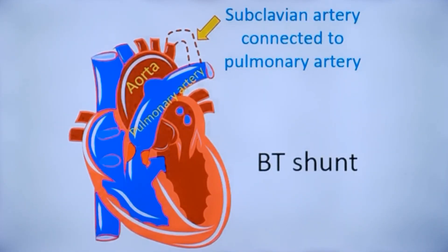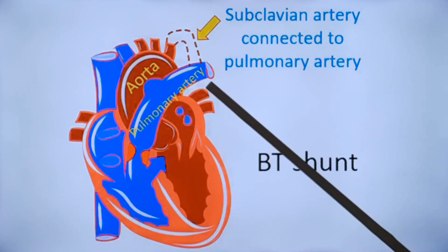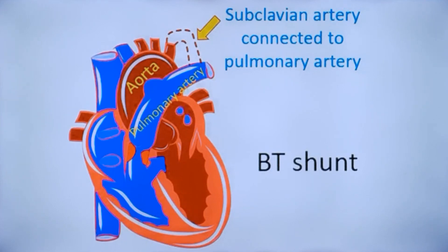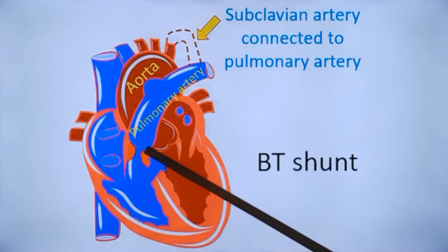The classic Blalock-Taussig shunt, or BT shunt, is an anastomosis of the subclavian artery to the pulmonary artery. The subclavian is divided proximal to the origin of the vertebral artery and anastomosed to the pulmonary artery. This is the classic BT shunt, and it improves pulmonary blood flow in conditions with low pulmonary blood flow, as in Tetralogy of Fallot — here depicting the interventricular septal defect and obstruction to pulmonary flow.